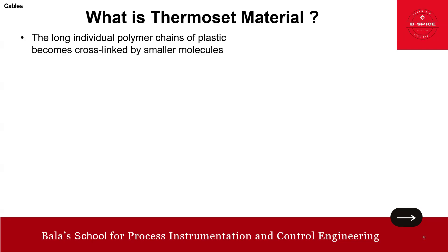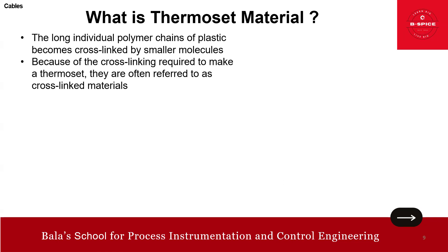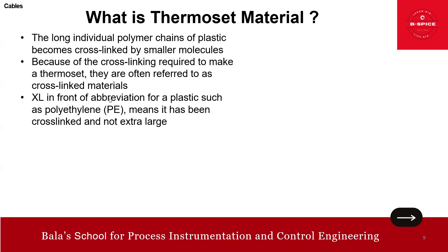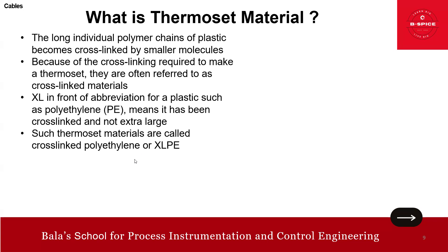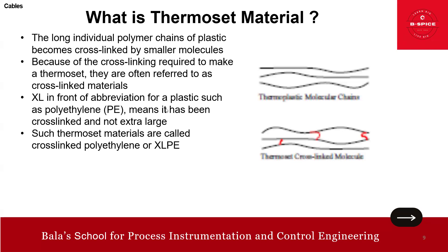The long individual polymer chains of plastic become cross-linked by smaller molecules. Because of the cross-linking required to make a thermoset, they are often referred to as cross-linked material. The 'XL' prefix in abbreviations for plastics such as polyethylene — that is XLPE — means it has been cross-linked, not 'extra large'. Such thermoset materials are cross-linked polyethylene or XLPE. So thermoplastic does not have cross-linking; thermoset does have cross-linking.